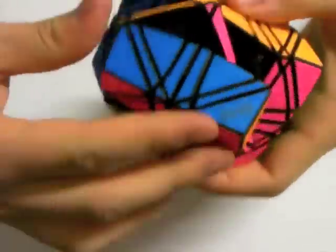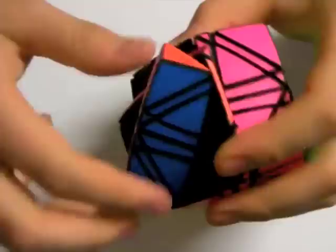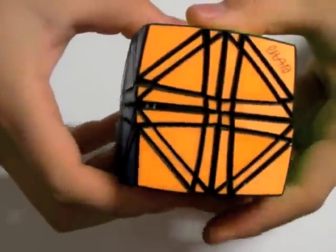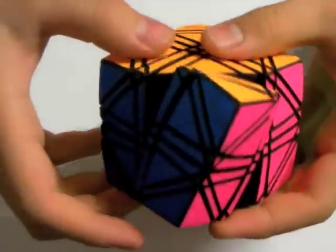So this is how it turns. It has two layers on each turning axis. And that is twelve turning axes. So there are twenty-four different turns you can make.